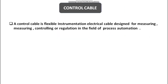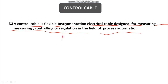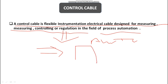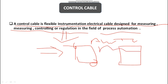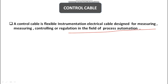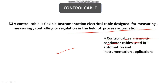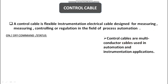Now let's come to control cable. A control cable is a flexible instrumentation electrical cable designed for measuring, controlling, and regulation in the field of process automation. It is generally used in automation systems to control devices like contactors, motors, and actuators. With the help of this cable we can also operate relays in the automation field. Control cables are multi-conductor cables used in automation and instrumentation to send signals for on/off commands and to get the status of each equipment.